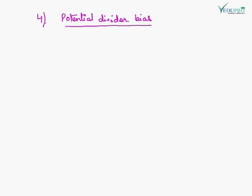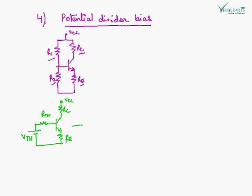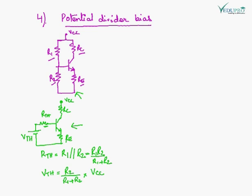The fourth technique is potential divider biasing. There are two biasing resistances R1 and R2, along with collector resistance RC and emitter resistance RE. To simplify the circuit, we use its Thevenin equivalent. RTH equals R1 parallel R2, which is R1·R2 divided by (R1 plus R2). VTH is given by the voltage divider formula: R2 divided by (R1 plus R2) times VCC.